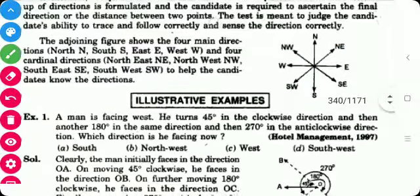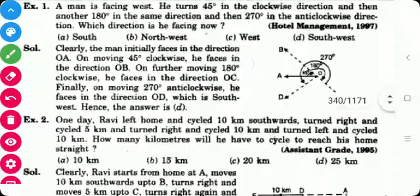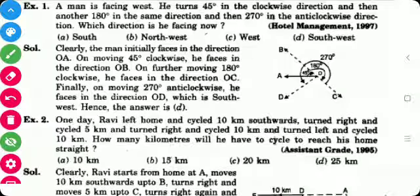So we will solve the examples. First example is a man is facing west. He turns 45 degrees in the clockwise direction and then another 180 in the same direction. So this is the 45 degree direction in the clockwise. After that he turns 180 degrees. So this is the 180 degree means C position and after that he turns